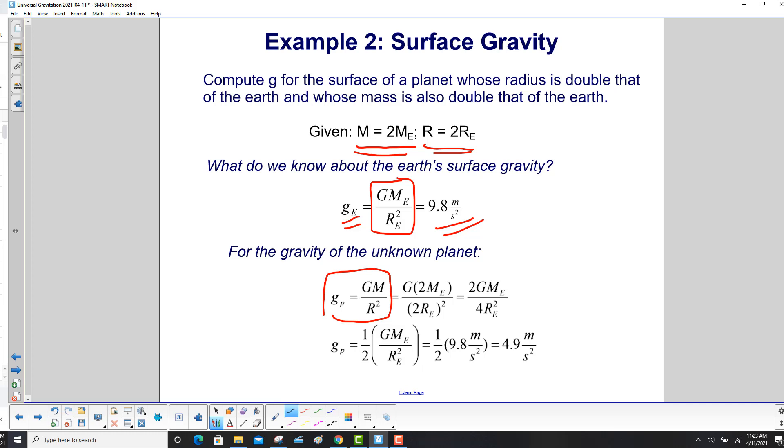But, what is M equal to? Well, M is equal to 2M e. So we plug it in there. And what's R equal to? 2R e. We plug that in there, do the math, and we get 2GM e over 4R e squared.